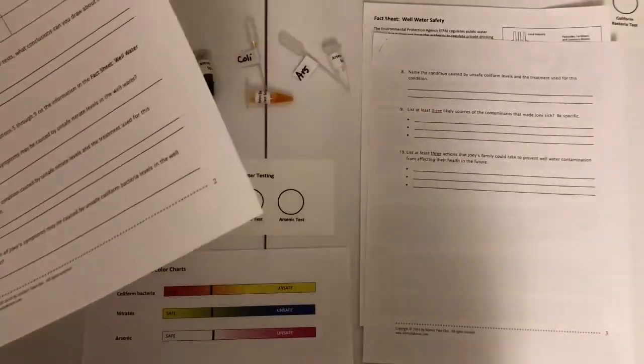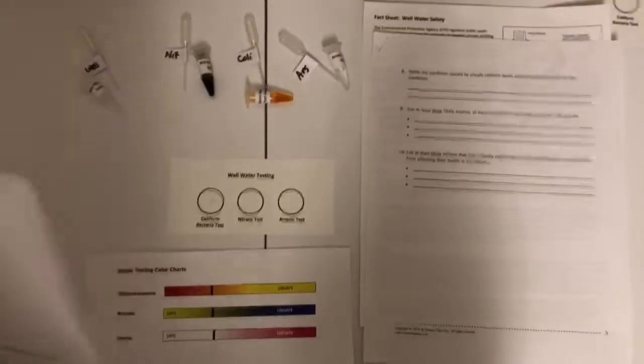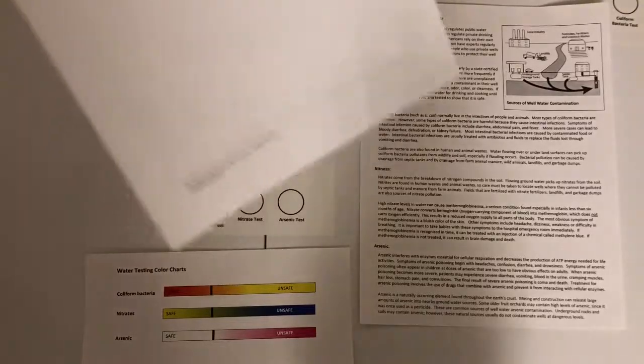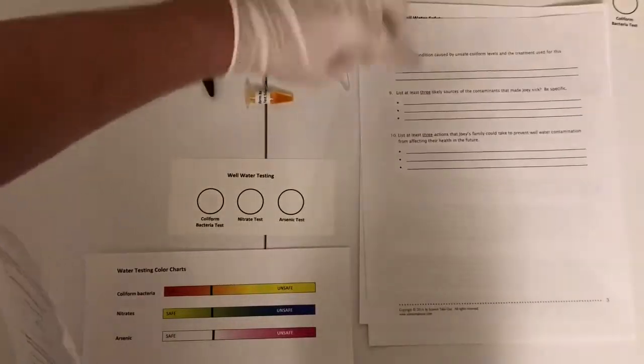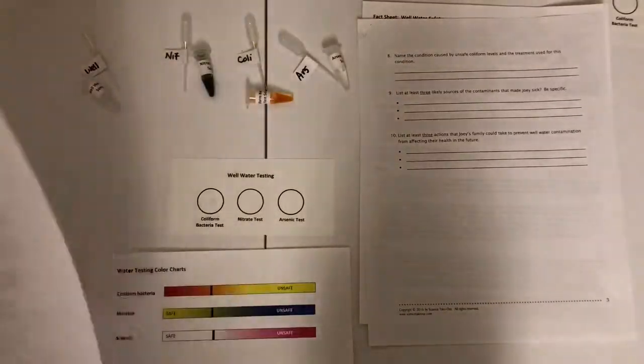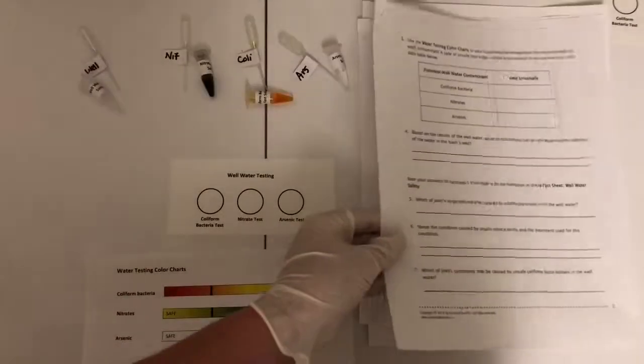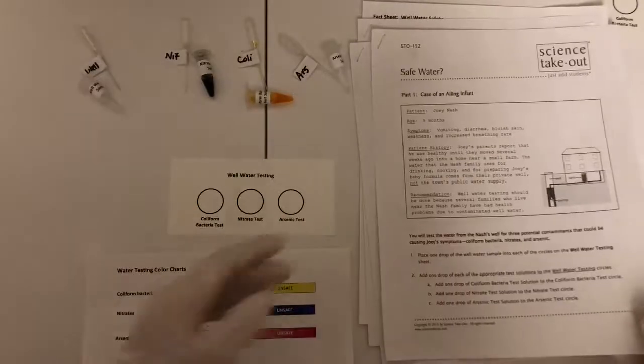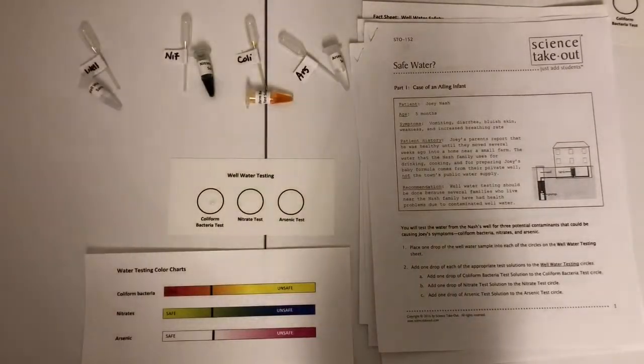And then you're going to complete your lab with what are the likely contaminants. And you can find some of that information here from likely contaminants and list three actions that Joey's family should do to improve Joey's health. That's how you complete this safe water lab with Science Takeout. I hope you enjoy it and have fun.